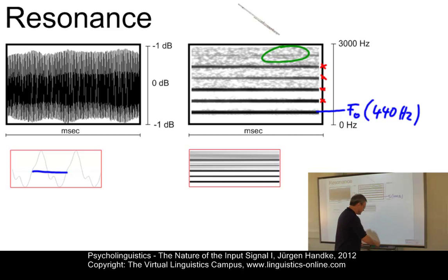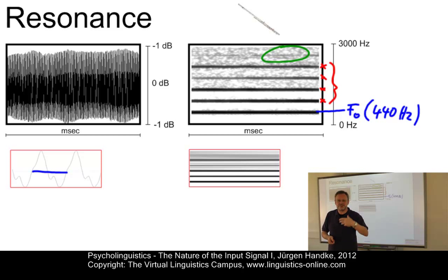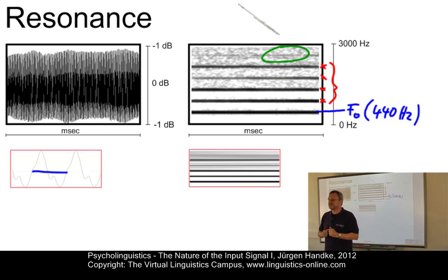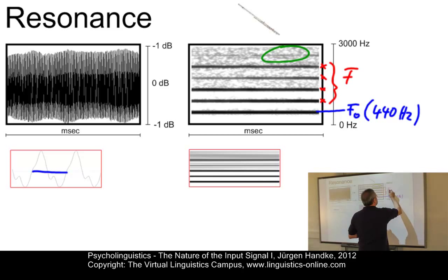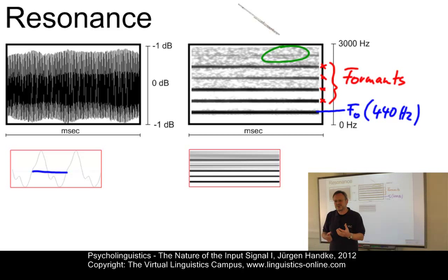What about these additional frequencies — these multiples? Whenever a sound is not just a simple input signal, but is filtered, intensified, and damped by the parts of the resonating body, then we get these resonance frequencies, or, as you call them, formants or formant frequencies. The formants are, if you wish, the echoes from the resonating body.